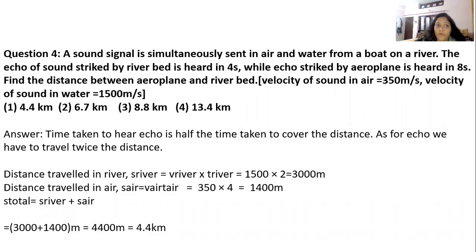Question number four. A sound signal is simultaneously sent in air and water from a boat on a river. The echo of sound tracked by river bed is heard in 4 seconds while echo tracked by aeroplane is heard in 8 seconds. Find the distance between aeroplane and river. Velocity of sound in air is 350 m/s and velocity of sound in water is 1500 m/s. There are four options. Answer option one is the correct answer. Let's go for the solution.